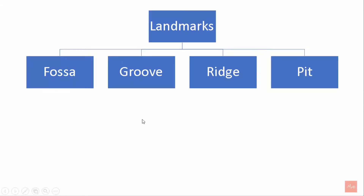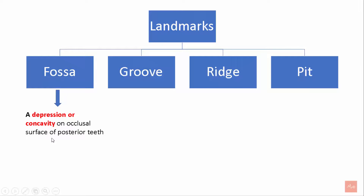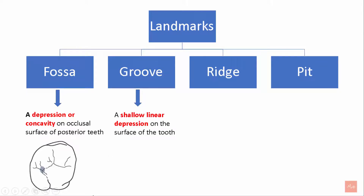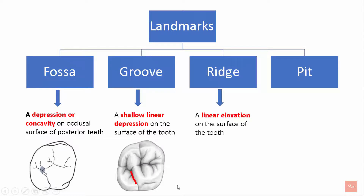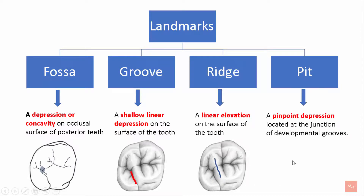Now let's go through the landmarks: fossa, groove, ridge, and pit. A fossa is a depression or concavity on the occlusal surface of posterior teeth. A groove is a shallow linear depression on the surface of the tooth. A ridge is a linear elevation on the surface of the tooth. A pit is a pinpoint depression located at the junction of the developmental groove.